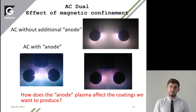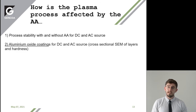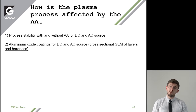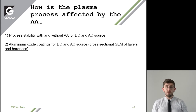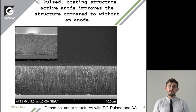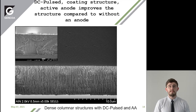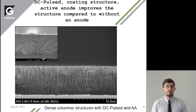How do these anode plasmas affect the coatings? Looking at aluminium oxide coatings produced in DC pulsed and AC systems with and without the anode — here's an image of an aluminium oxide layer produced with a DC pulsed system without the active anode, and then with the active anode. Both images show columnar structures, and there is an improvement in density and hardness with DC pulsed with the active anode.